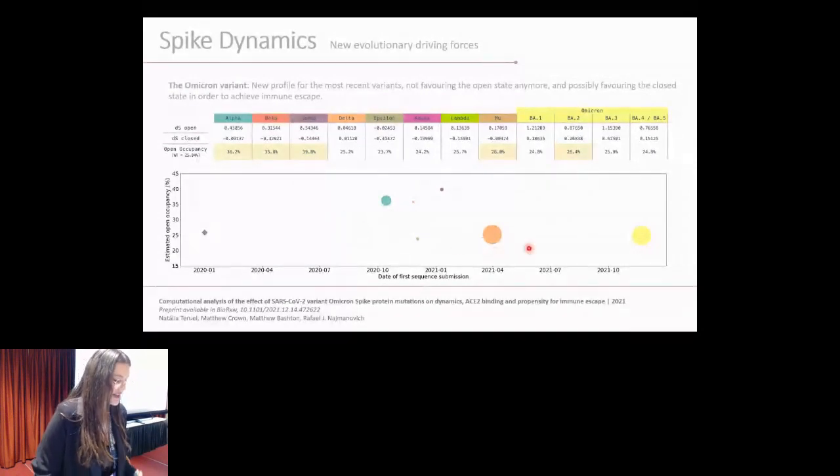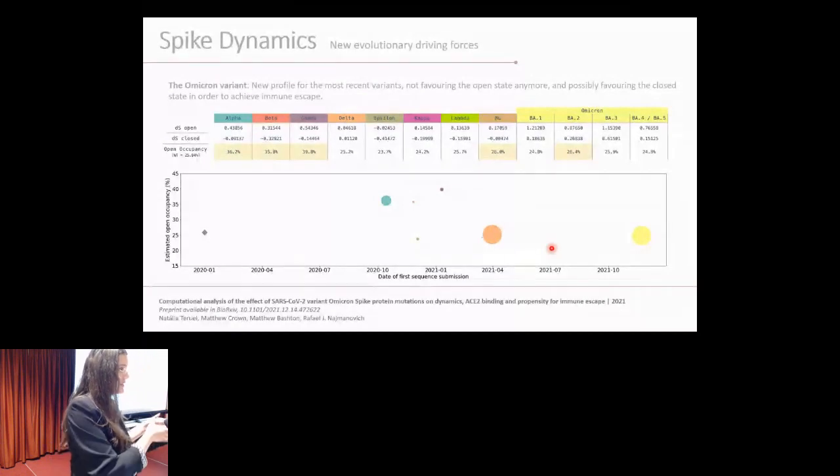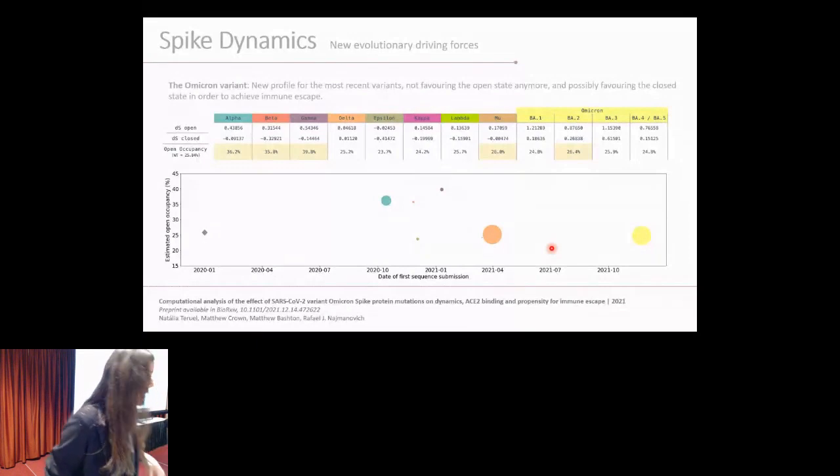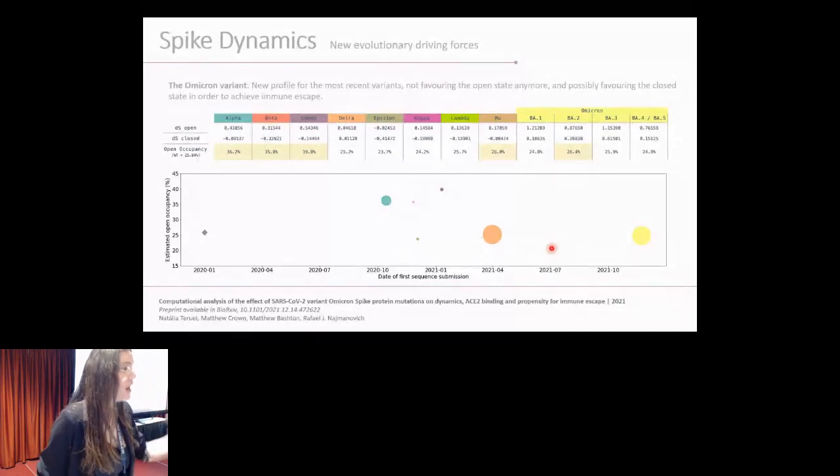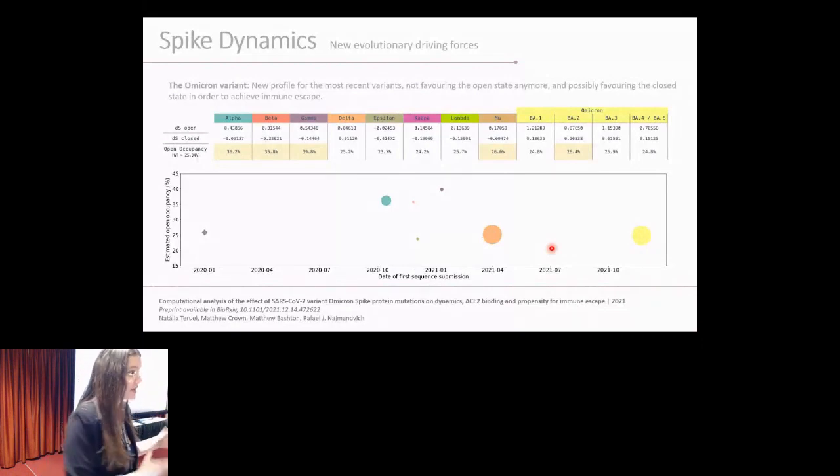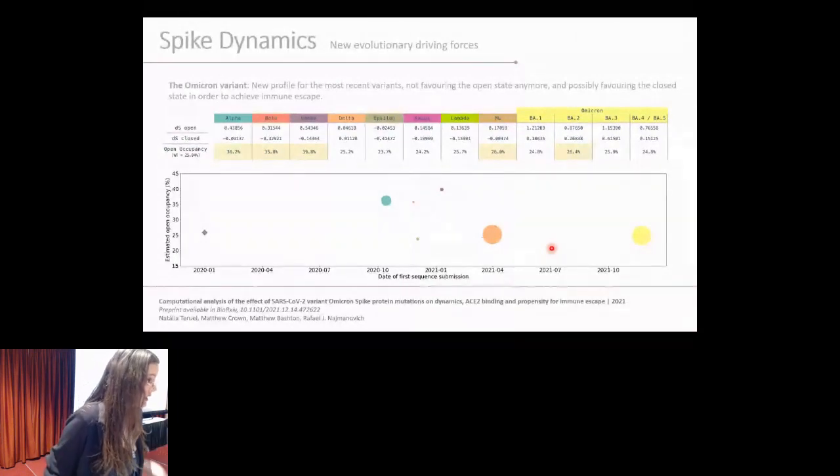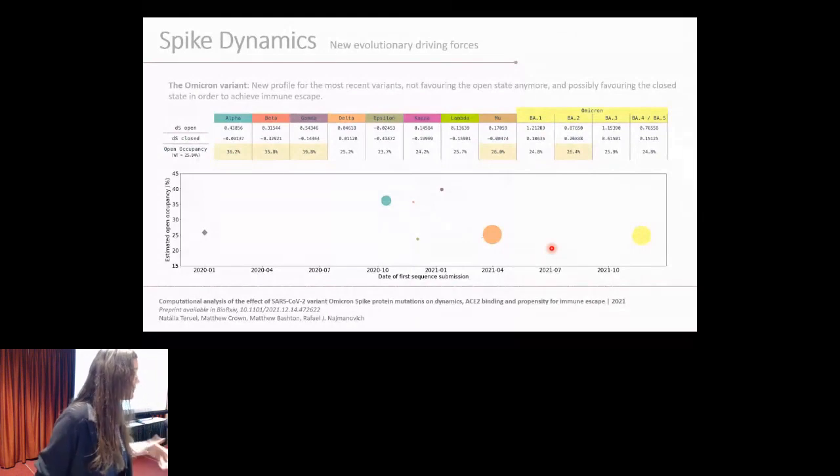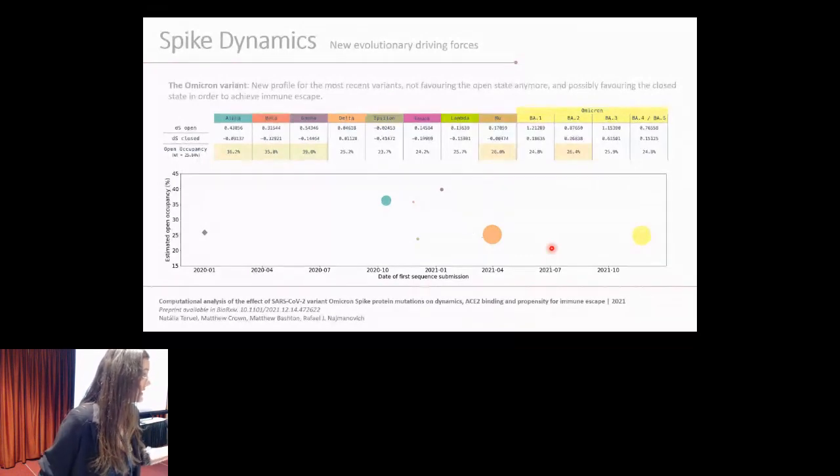But from delta on, successful variants were not in the way of having an open state conformation increased. Actually, compared to the latest variants, they were actually having favored closed state conformation. Our hypothesis for that is that the receptor binding motif is such an important epitope that maybe because of immune escape, the virus was facing this trade-off of decreasing its transmissibility because of the open state occupancy in order to escape immune recognition by hiding its receptor binding motif. So if we wanted to keep predicting new variants, we had to evaluate something else other than just the open state occupancy.